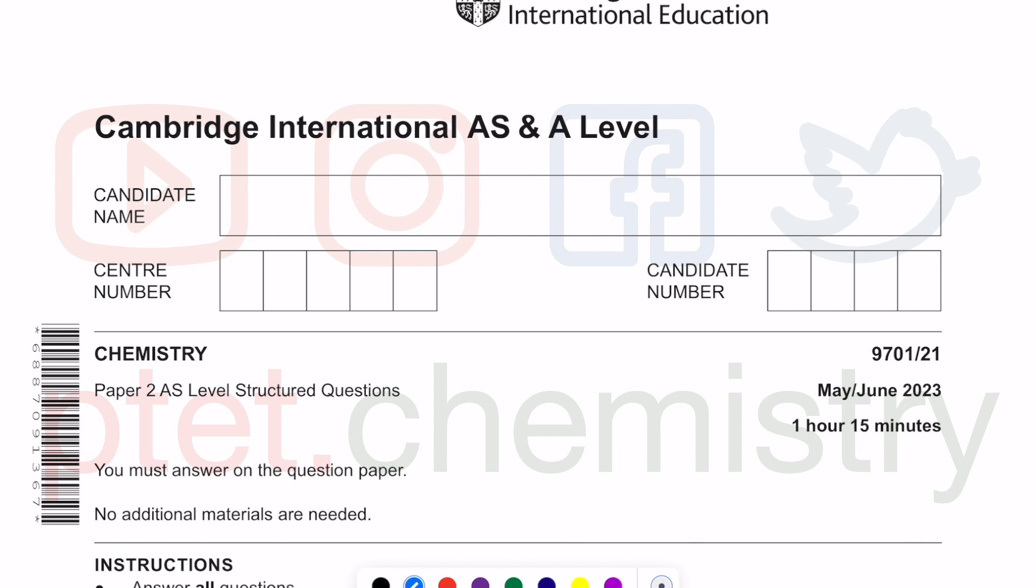Hello everyone, welcome back to P-TECH Chemistry channel. My name is Dr. On. In this tutorial video, we'll go through this AS-level Cambridge International Chemistry exam for May/June 2023. This is the one hour, 15 minutes paper two, variant one.